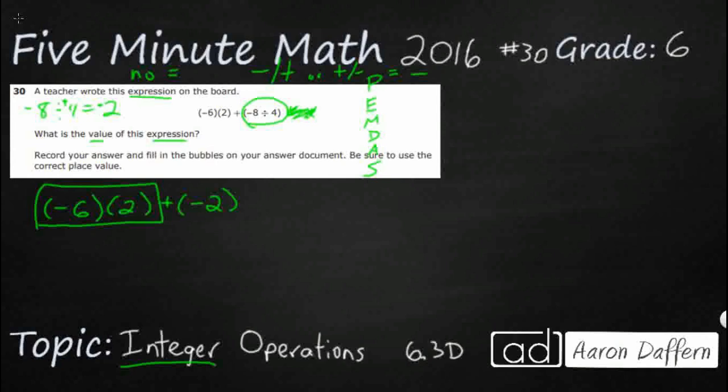But there is a secret, whenever you see anything outside of a parenthesis, or two parenthesis together, it is always going to be multiplication. For whatever reason, we can show multiplication without showing the multiplication sign. So this is actually negative 6 times 2, is what that is.